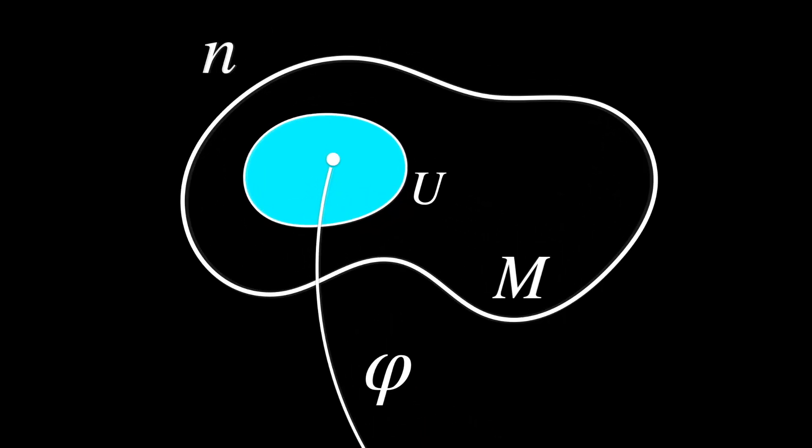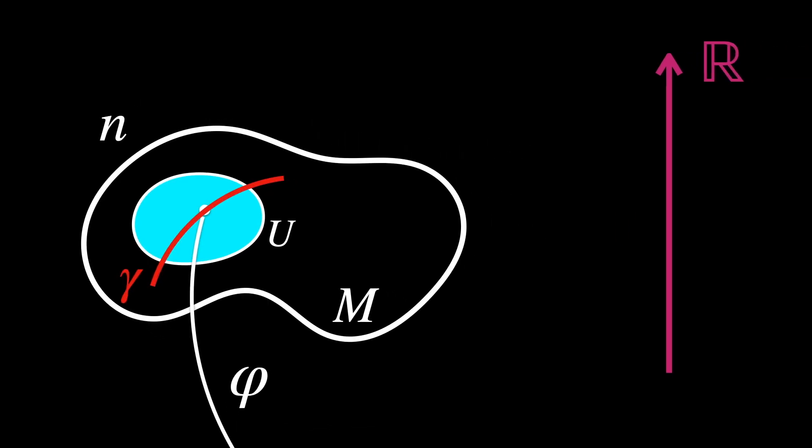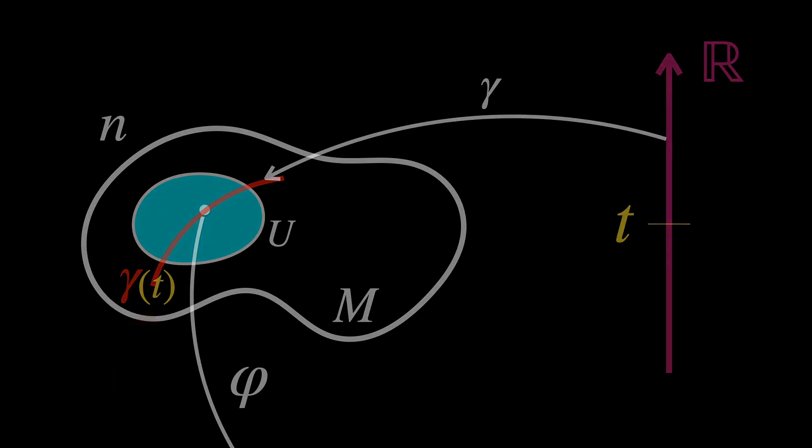On the original manifold, we have a curve that runs along it, Gamma, where T, like time, or any other continuous variable, is the parameter. It's represented like this. And it's read like Gamma is a map from T to M.